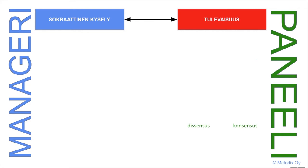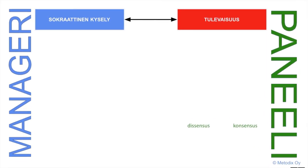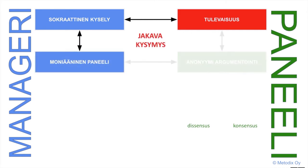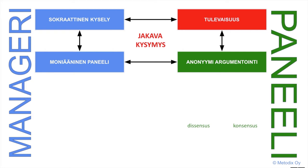Esimerkissä toteutuu yksi Delphoi-metodin ja pedagogiikan avainpiirre: kiistakysymystä käytetään tulevaisuudessa ja sitä kautta tuodaan nykyhetkeen uusia vaikuttavia näkökulmia. Hyvä kysymys on yllättävä ja jakava – sellaisena se motivoi taitavan fasilitoinnin auttamana keskustelemaan ja argumentoimaan. Manageristo rekrytoi paneeliin tarkasteltavan ilmiön asiantuntijoita ja intressiosapuolia monipuolisesti niin, että kaikilla keskeisillä näkökulmilla on paneelissa edustus. Valinnassa managerilla on apunaan matriisi, jonka toisena muuttujana ovat eri asiantuntijuusluokat ja toisena eri asianosaisuudet eli intressit. Valinnassa ei ole kyse kvantitatiivisen tutkimuksen otoksesta, vaan otos perustelluista näkemyksistä ilmiöstä ja sen kehittymisestä.